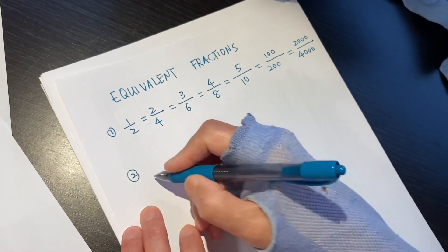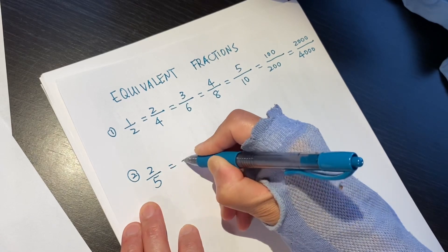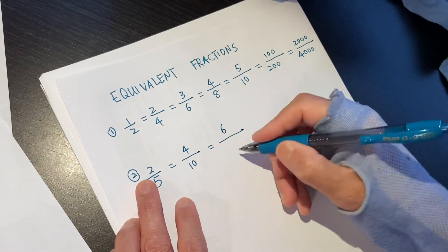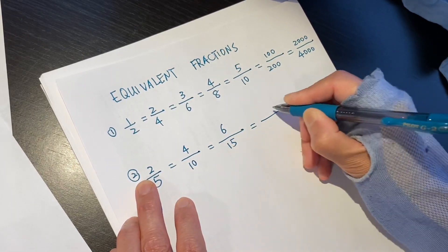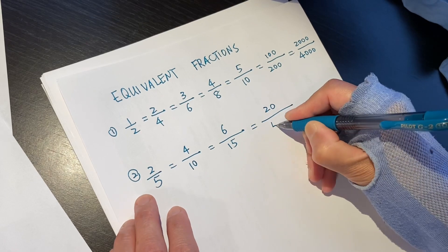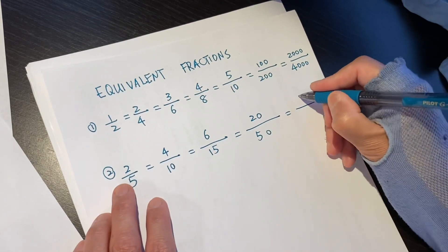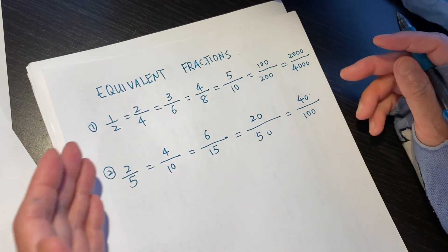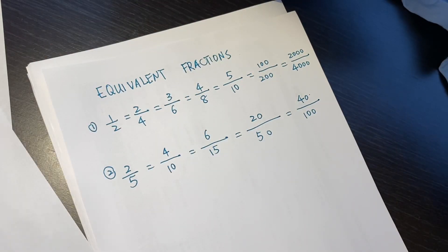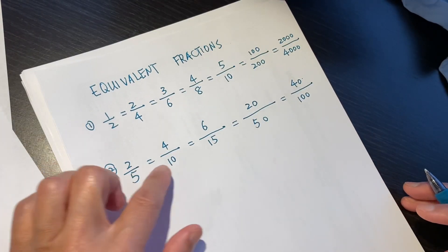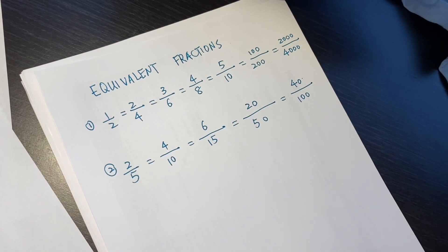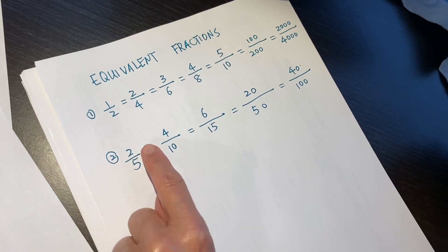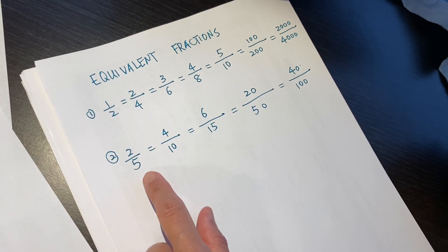Let's say another number: 2 over 5. It could be 4 over 10. It could be 6 over 15. It could be 20 over 50. It could be 40 over 100. It could be many more numbers. And they are equivalent. I will show you why they are equivalent. On the top, we times 2. On the bottom, we times 2.